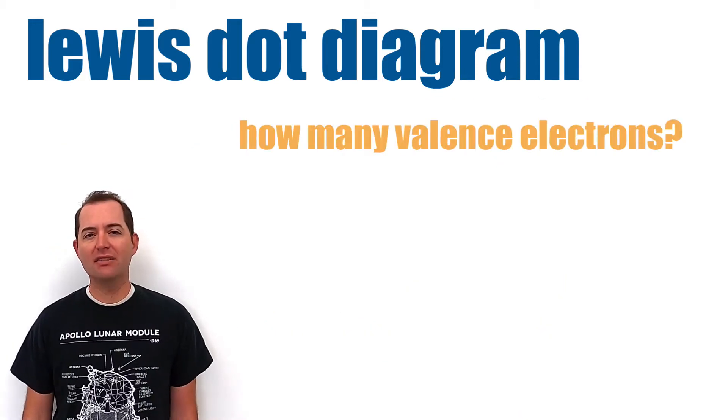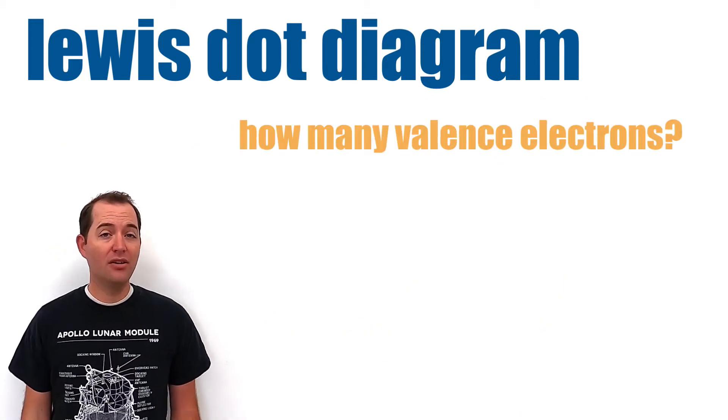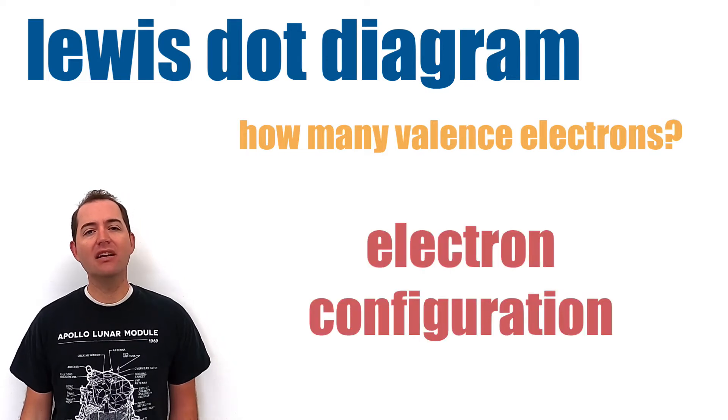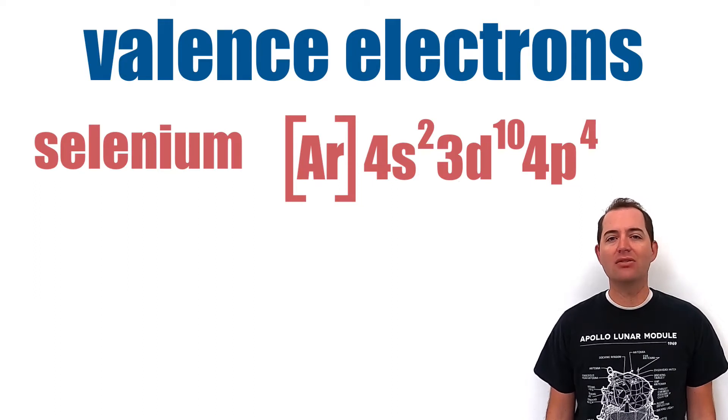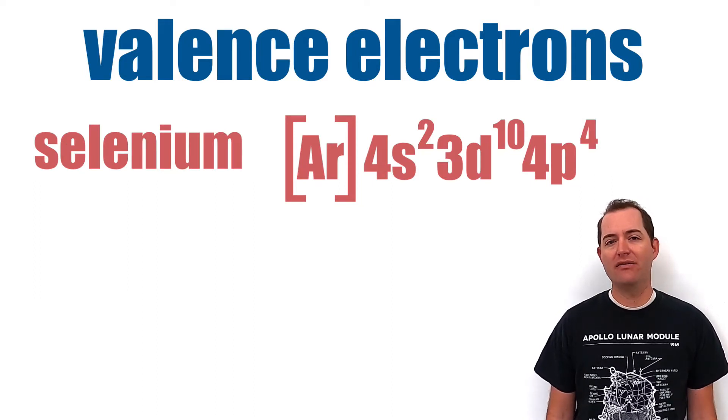We first need to know the number of valence electrons on an element. To do this, we can look at an abbreviated electron configuration. For example, let's look at selenium's noble gas or abbreviated electron configuration.